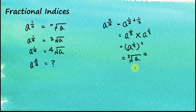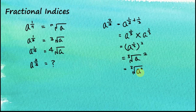So this is the square of the cube root of a. Or we can write this as the cube root of a squared. Both of these are the same.